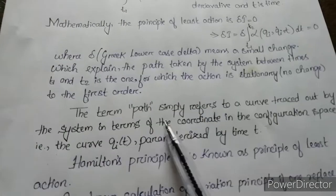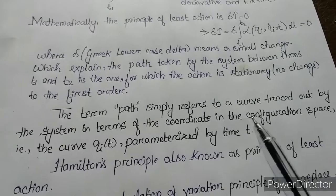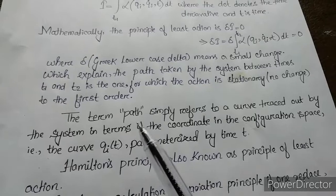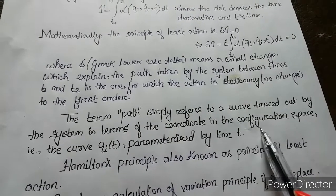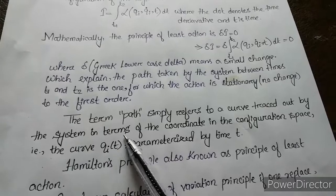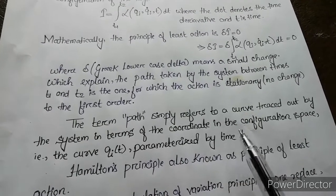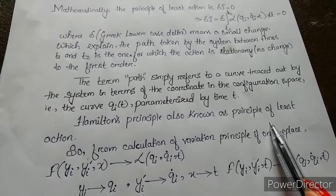What type of path are we talking about? The path here simply refers to a curve traced out by the system in terms of coordinates in the configuration space, which means the curve qi(t) parameterized by time t. Hamilton's principle is also known as the principle of least action.